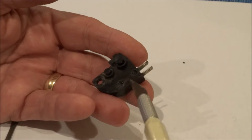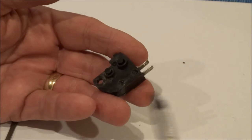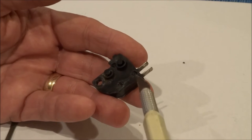What they are is posts that come through from the other side, and when they assemble the switch they put a little heat on the top of those to kind of turn them into plastic rivets.